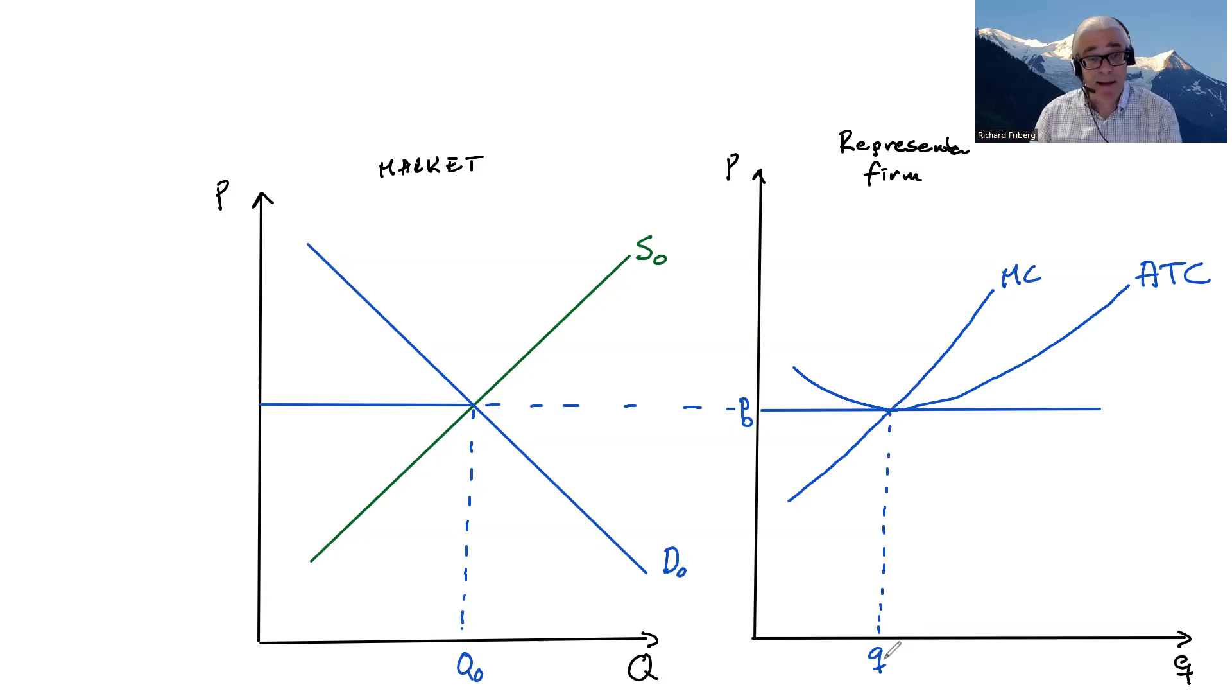Now assume that something happens. Demand for bread shoots up. All of a sudden, people want more bread or some spectacular health benefits associated with bread or you name it. Something happens to demand. So that clearly affects demand. And we're looking at the market level here. So demand shifts up to, say, D1 here.